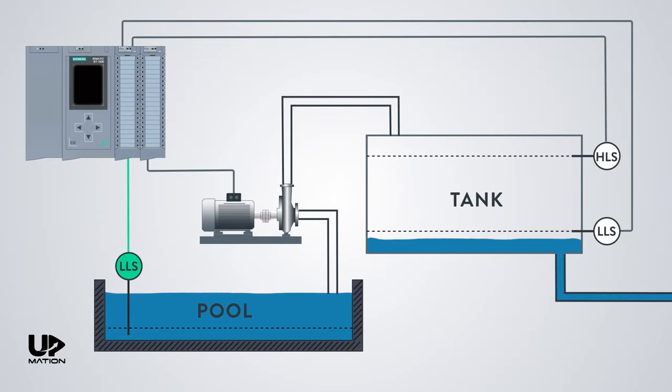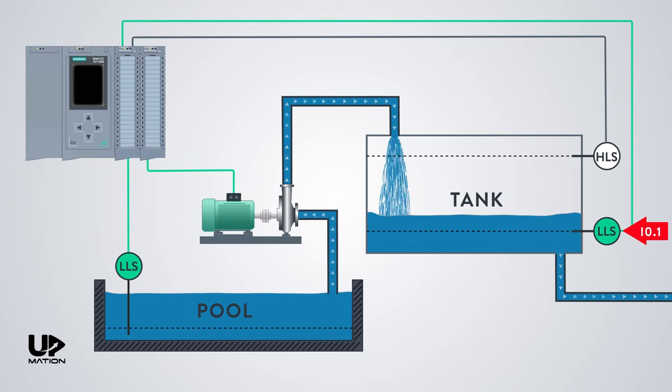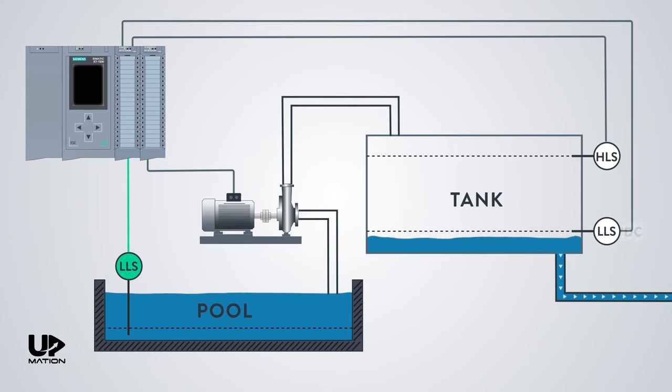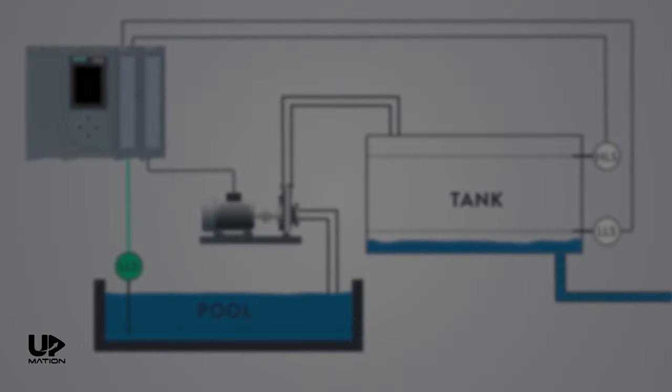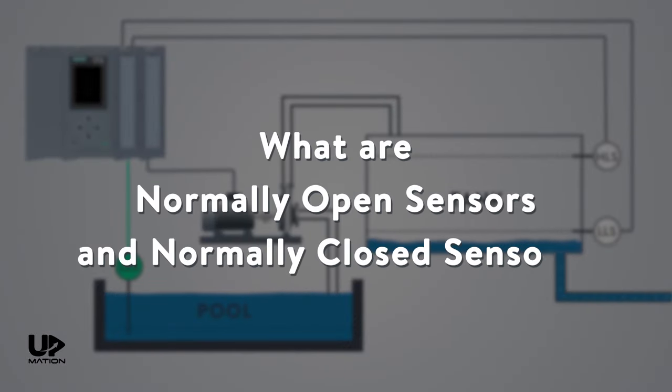Again, for keeping the logic as simple as possible, I assume that all the level switches are normally open switches and will send a 24V signal when they sense the water, and they send a zero signal when they do not. To learn more about the normally open sensors and normally closed sensors and the real cases in the industry, we have provided a link to a quick tip video in the description.